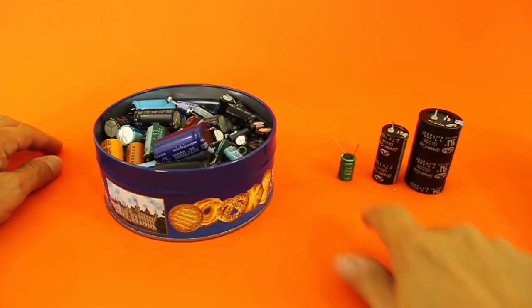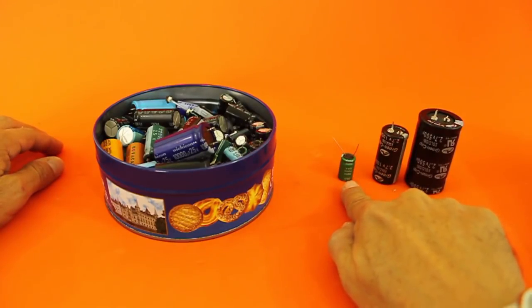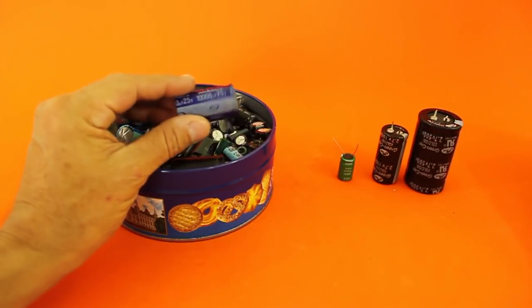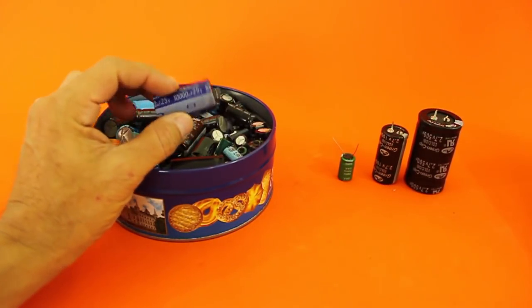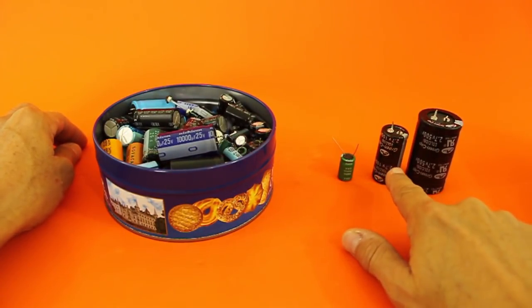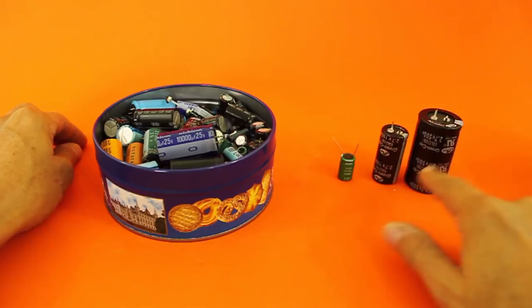By contrast, this smaller supercapacitor is of 10 farads, so you would need to put in parallel 1,000 of these to have the capacitance of this one, and this other is of 100 farads and this of 500 farads.